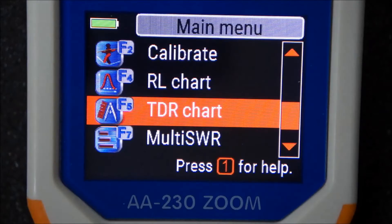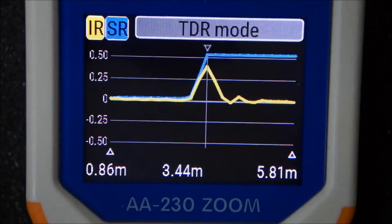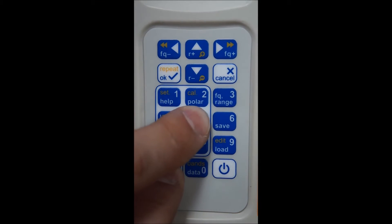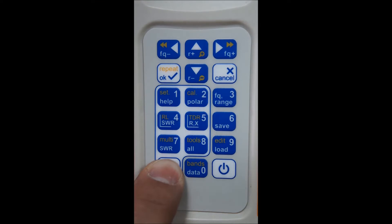For example, you can enter the TDR mode via the main menu using the cursor keys, or you can use the hotkey F plus 5 to enter the TDR mode directly.